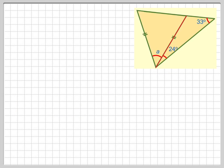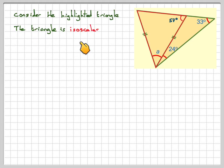Now consider this highlighted triangle. We know this is 57 degrees. The triangle is isosceles.